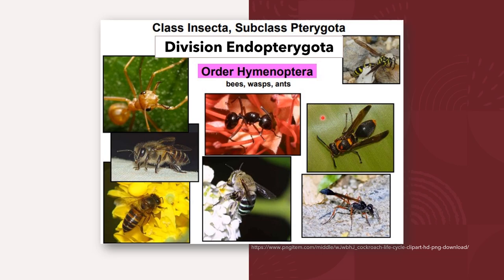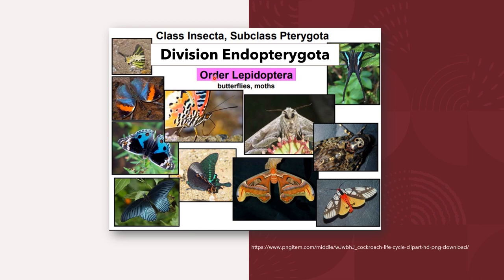The order Hymenoptera includes bees, wasps, and ants, and they also exhibit complete metamorphosis. Another example with holometabolous development is the order Lepidoptera, which includes butterflies and moths.